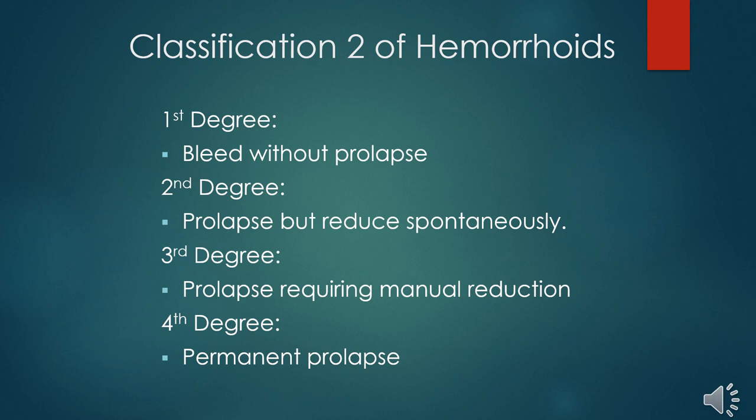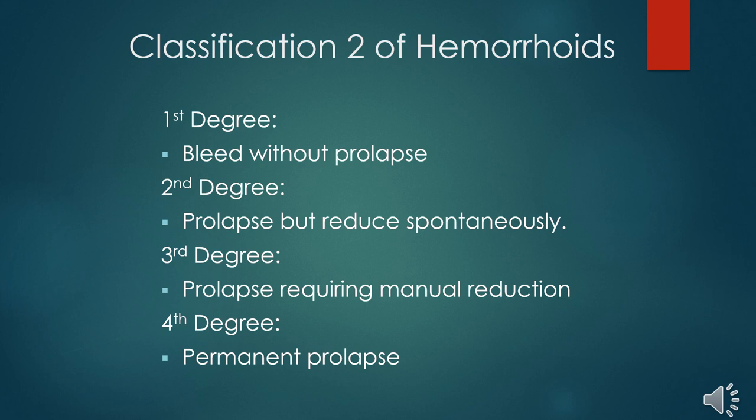For the second degree, the hemorrhoid will bleed and it will prolapse, but will spontaneously reduce — meaning it will go back on its own after straining is no longer present. For the third degree, the hemorrhoid will bleed and then prolapse, but after straining stops, it does not reduce spontaneously and will require manual reduction, usually by pushing back with fingers.